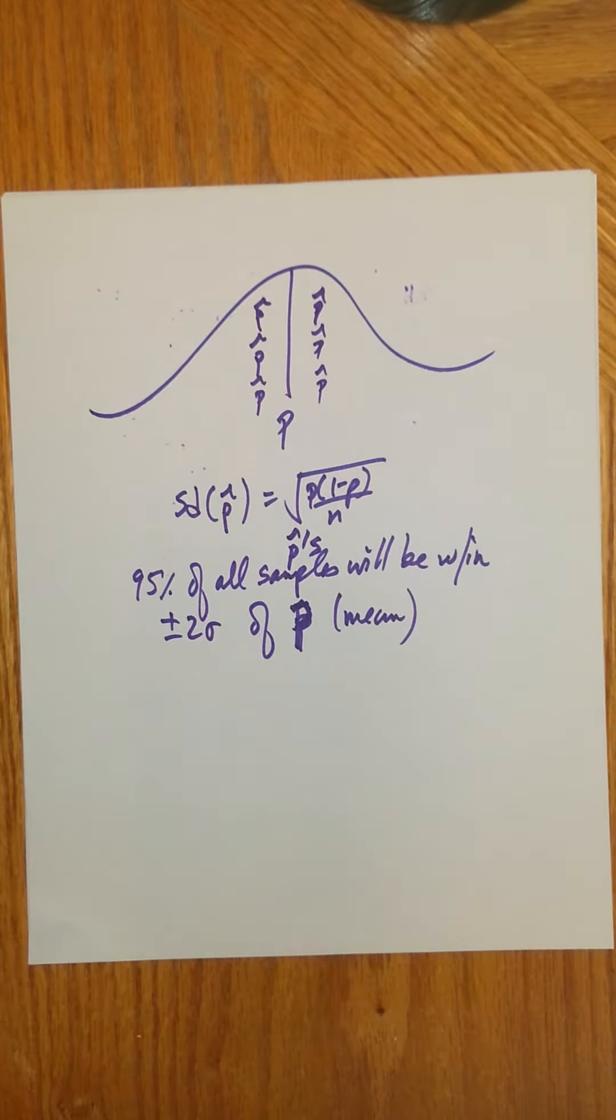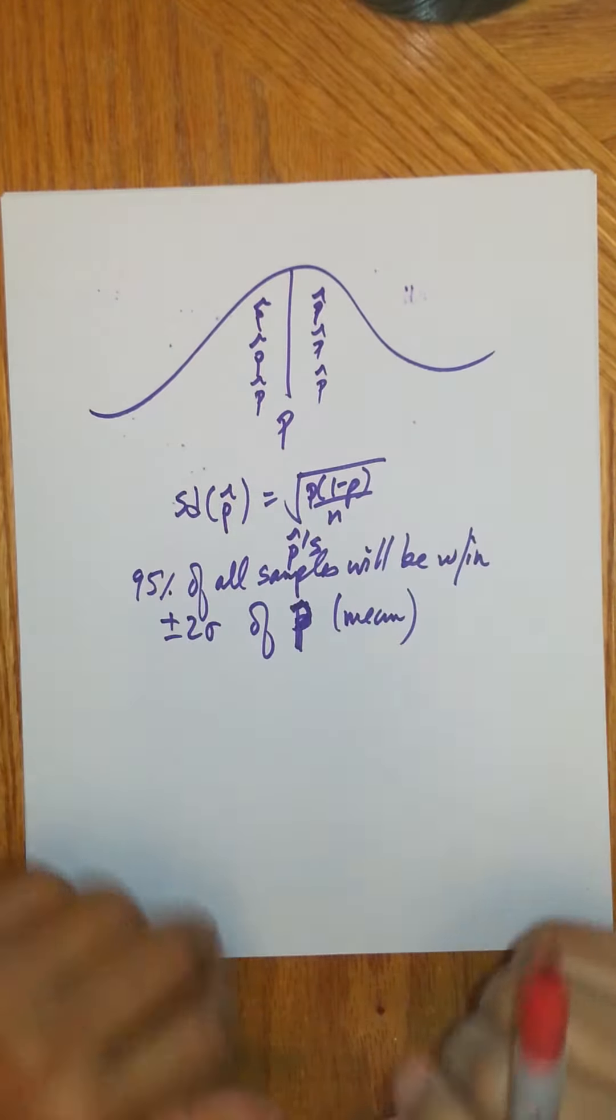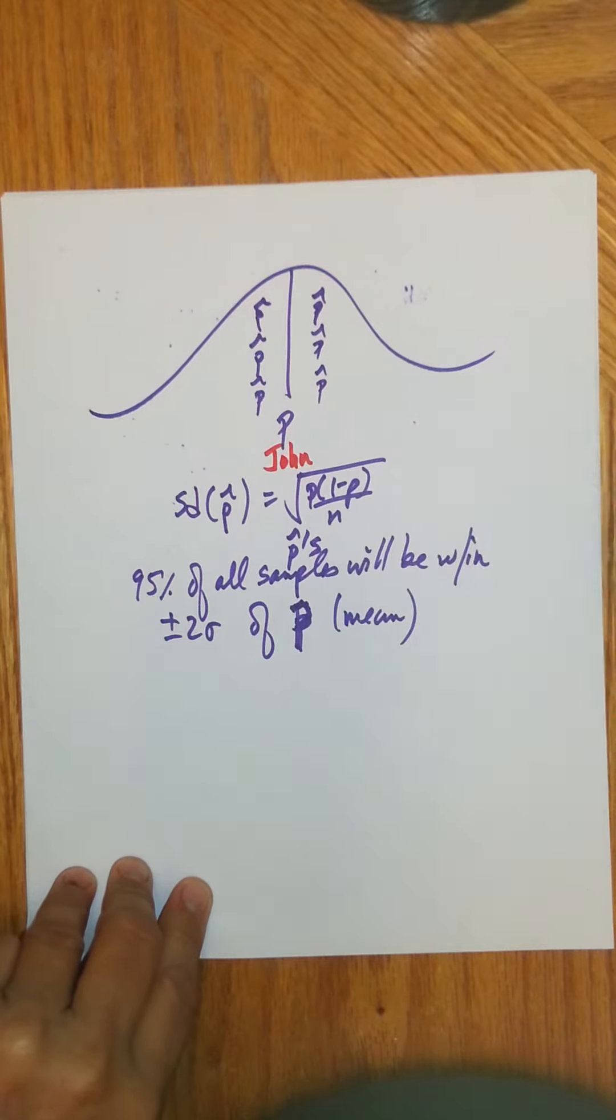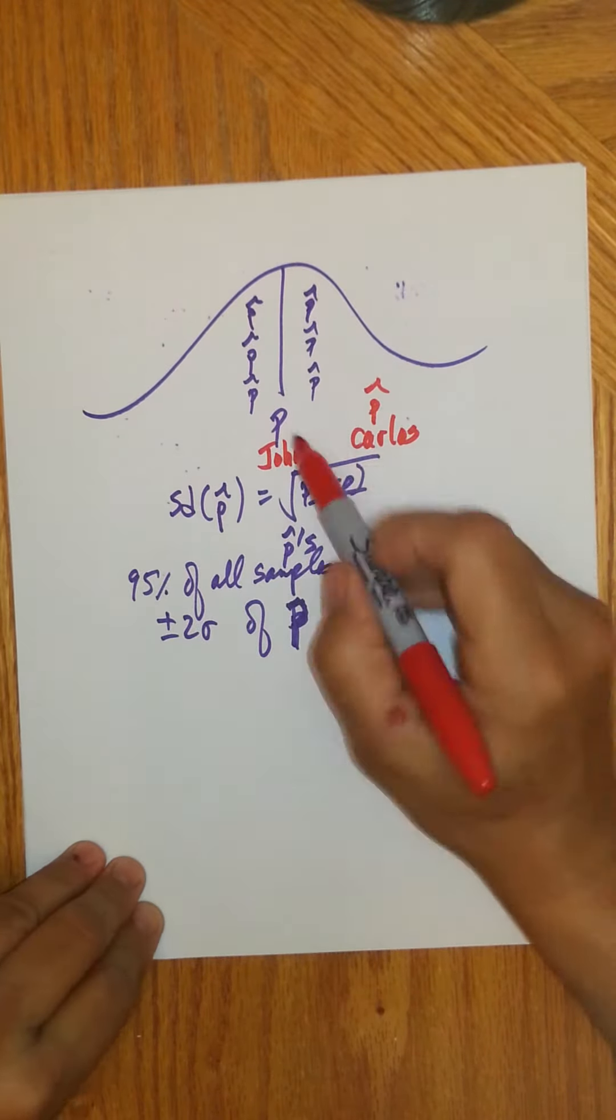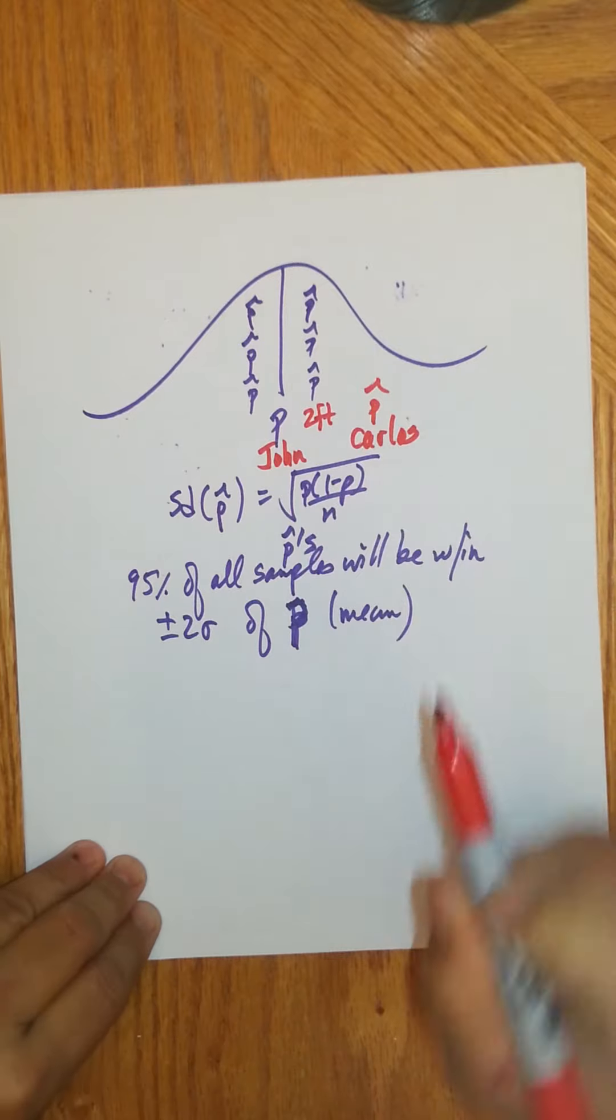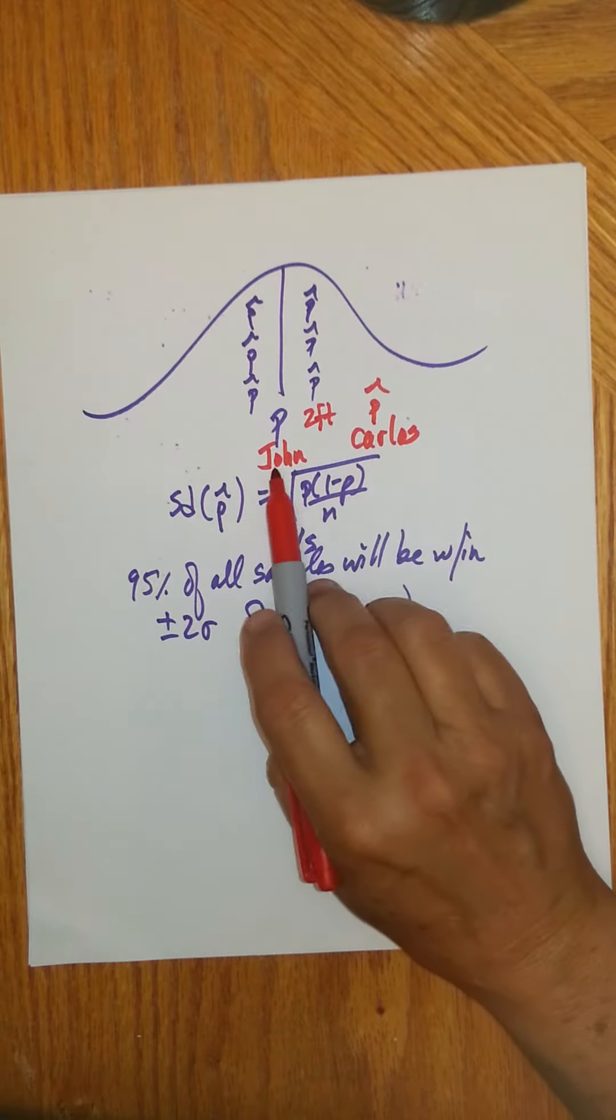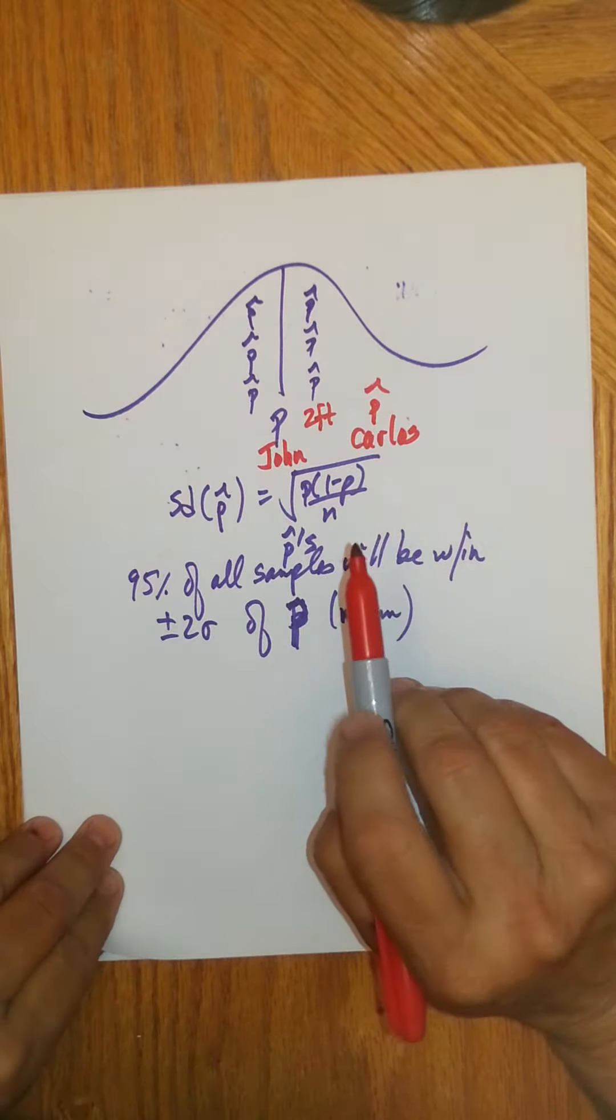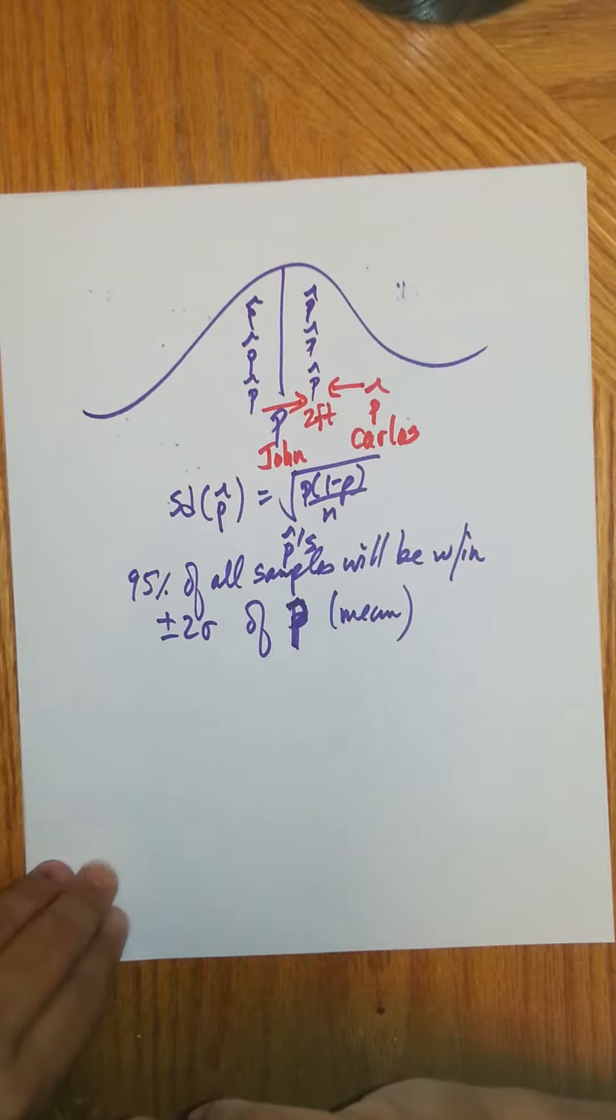So how does that help us come up with our leeway? Well, here's the idea. We're looking at it from a certain point of view where we say 95% of the samples, or the p-hats, are within two standard deviations of p. But let's take a look. Suppose the truth, let's call that a person, let's say John. And let's say Carlos is a specific p-hat. And let's say these two gentlemen are two feet from each other. So let's say Carlos is a sample, and that sample is two feet, or the idea is two standard deviations from John. Well, how far is John from Carlos? The same distance. They're basically the same distance away. The only difference is perspective. Are you looking from p to a p-hat, or are you looking from a p-hat to a p?